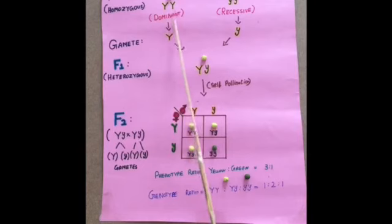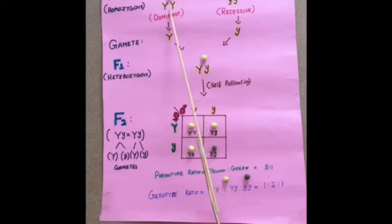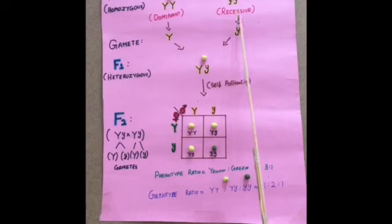First let me take a pure yellow color pea bearing plant and a pure green color pea bearing plant. The yellow color is the dominant trait of pea color and green color is the recessive trait for pea colors.